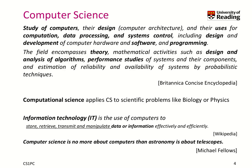So, let's get started with an overview. Computer science involves the study of computers, their design, and their uses for computation, data processing, and systems control, including the design and development of software and programming. The aspects marked in bold here are actually part of this module. The field also encompasses theory, mathematical activities, design and analysis of algorithms, performance studies, and so on — and those parts are actually part of this module too.